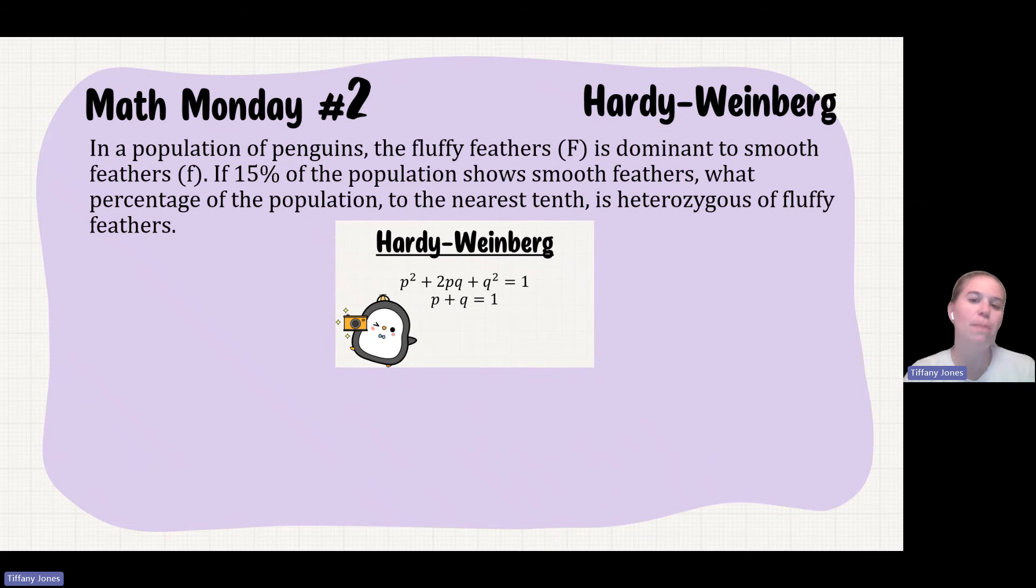So in a population of penguins, the fluffy feathers, capital F, is dominant to smooth feathers, lowercase f. If 15% of the population shows smooth feathers, what percentage of the population to the nearest tenth is heterozygous for fluffy feathers?